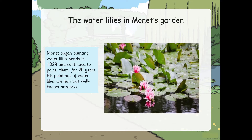This is a picture of the very famous water lilies in his garden. Do you know that Monet began painting water lilies in 1899 and continued to paint them for 20 years? His paintings of water lilies are his most well-known artworks.